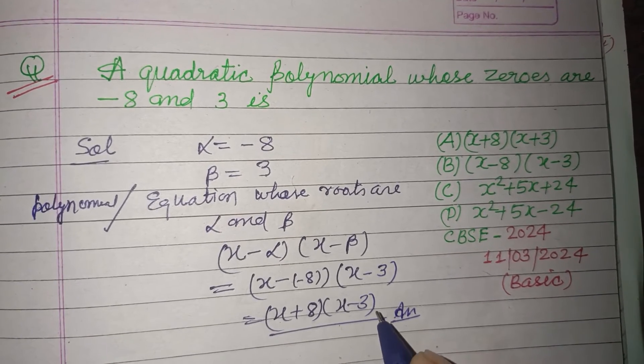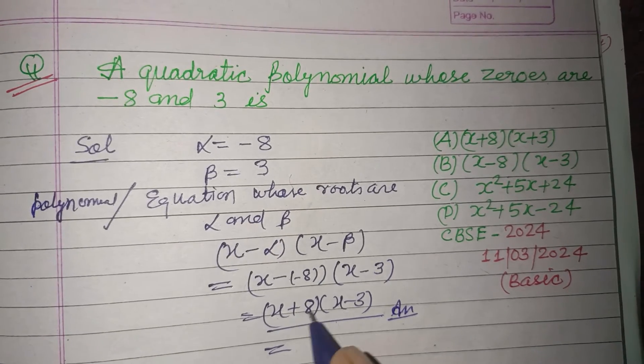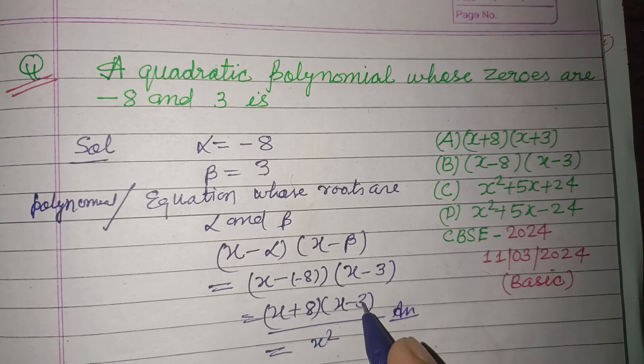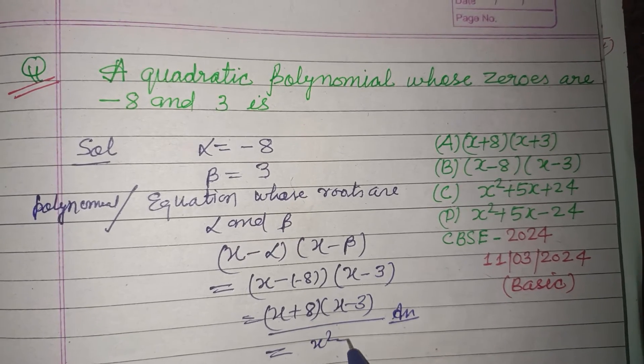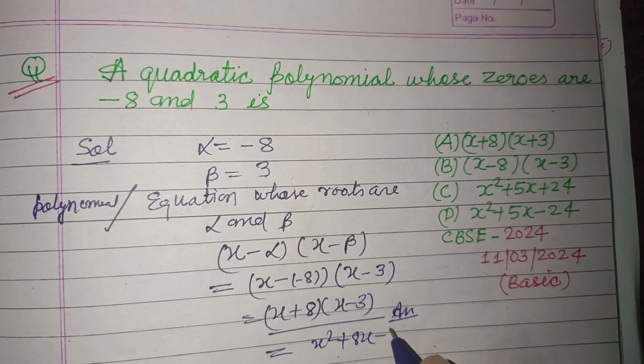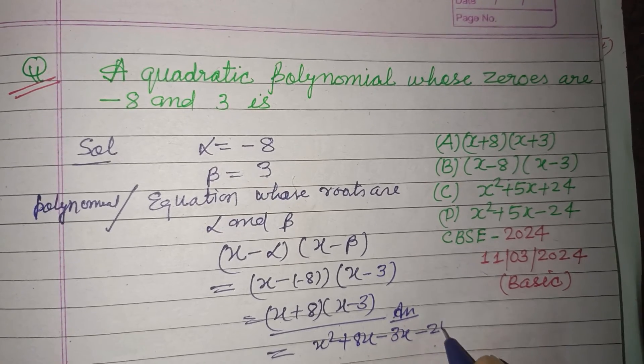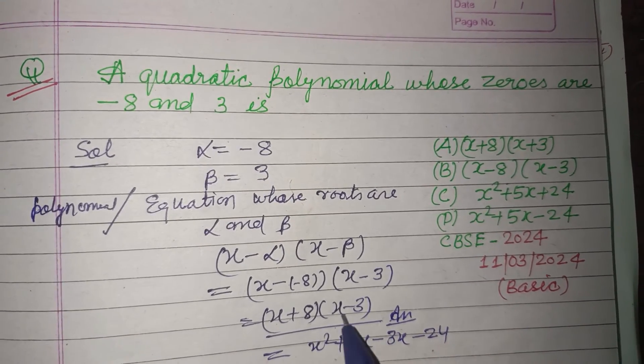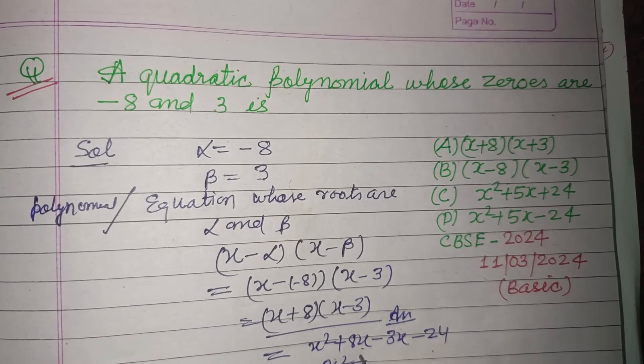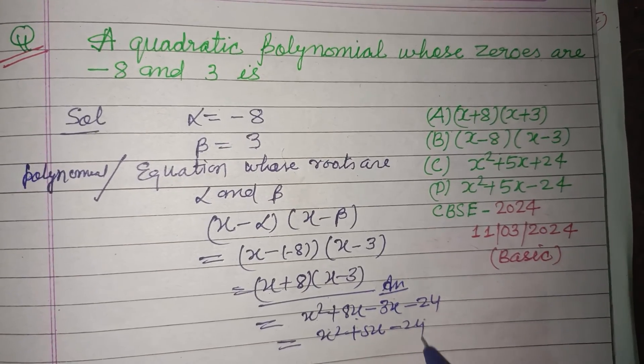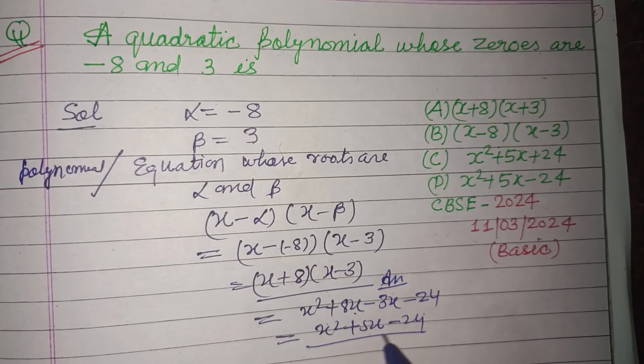On multiplication, we get x² - 3x + 8x - 24. The 8 times 3 is 24, so this becomes x² + 5x - 24.